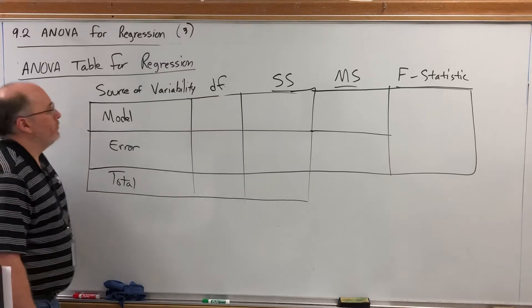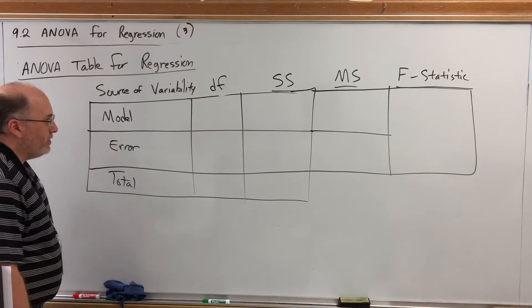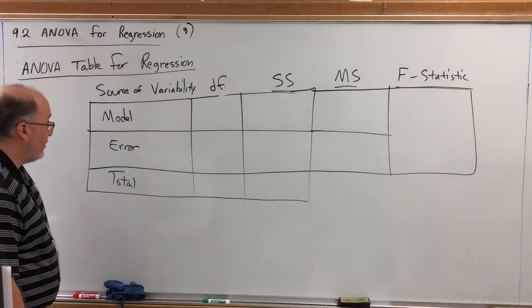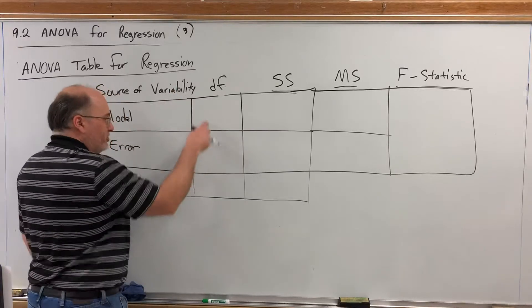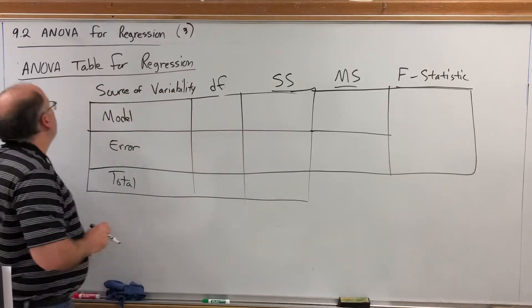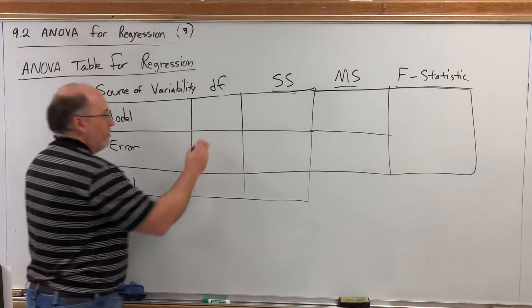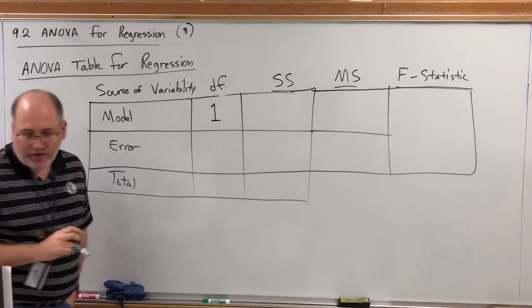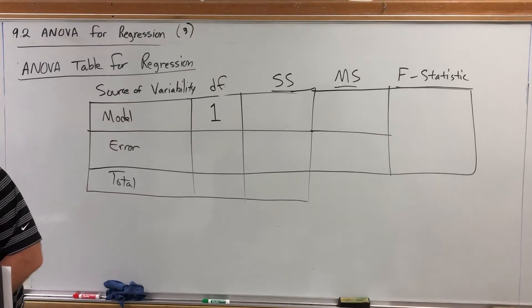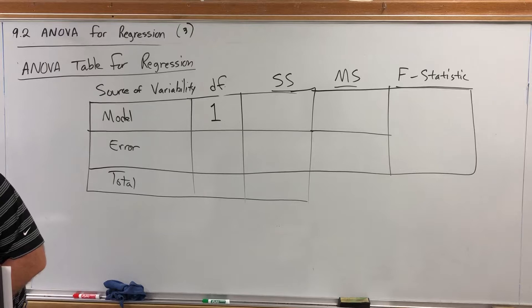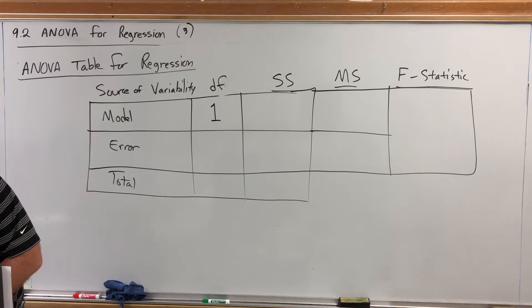As far as the degrees of freedom value, there are formulas for two of them and the third one is just always the same value. This column is still additive meaning that the first two add up to the third. For ANOVA for regression the degrees of freedom for the model is always the number one. It is one because there is one variable. One degree of freedom for the model.